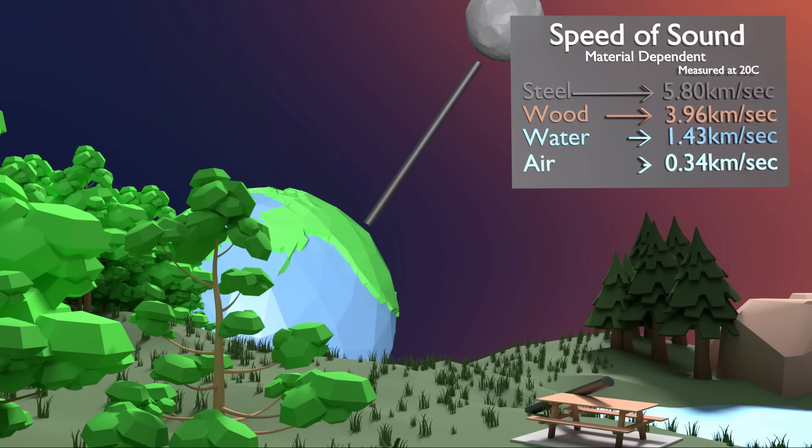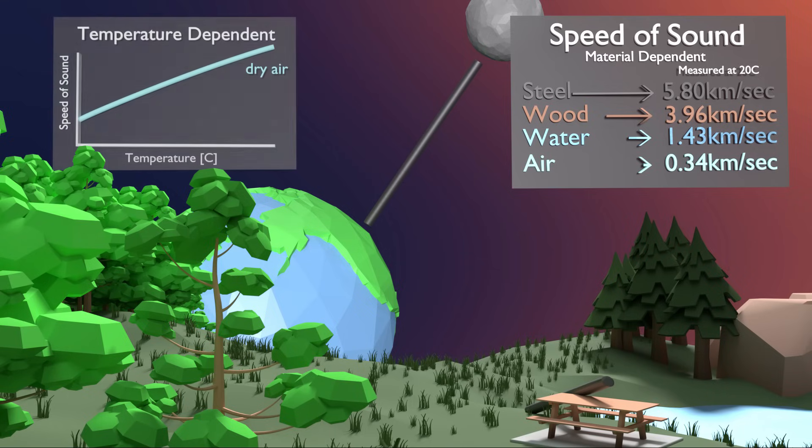The speed of this propagation is called the speed of sound, and it is dependent on the material or medium that the motion passes through. It is also dependent on the temperature of that particular medium.